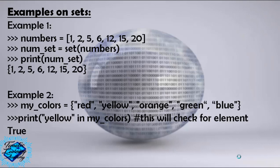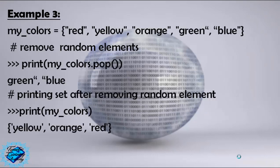Example 3: my_colors equals red, yellow, orange, green, blue. Remove random element: print my_colors dot pop, green blue. Print set after removing the random element, print my_colors: yellow, orange, red.